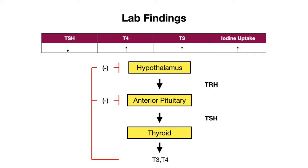So what are the lab findings that would lead us to think of Graves' disease or a hyperthyroid state? You really need to understand the underlying pathophysiology to determine the lab findings. In Graves' disease, antibodies stimulate the TSH receptor, causing the thyroid gland to produce thyroid hormone, so you'll have an excess of T4 and T3. This leads to negative inhibition causing TSH to decrease. Additionally, iodine uptake will also be increased in order to keep up with all the thyroid hormone that the thyroid gland is producing.